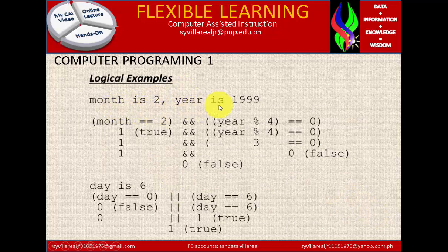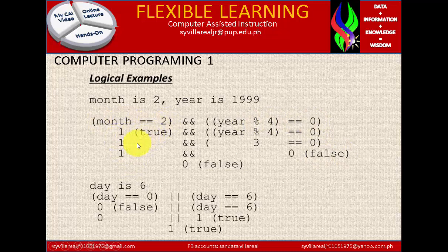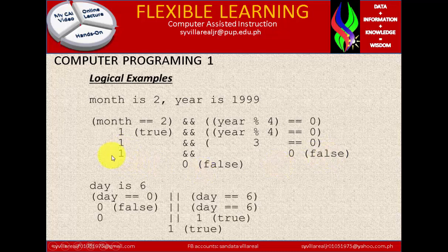Logical example: month is 2, year is 1999. If month equals 2, that is true (value 1). And year modulo 4 equals 0: 1999 divided by 4 gives a remainder of 3, so 3 equals 0 is false (value 0). So 1 AND 0 — 1 times 0 is 0 — the answer is false.